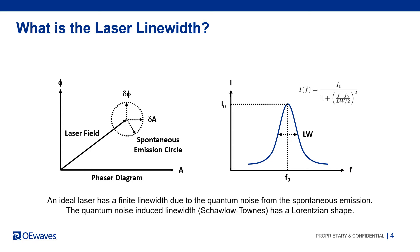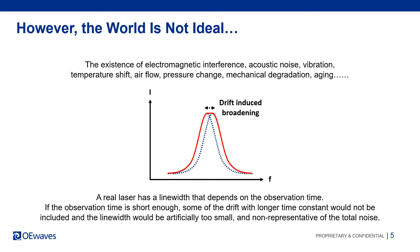The laser line width was derived and introduced by Schawlow-Townes to describe the noise due to spontaneous emission. This quantum noise induced line width typically describes the instantaneous line width and has a Lorentzian shape. However, quantum noise is not the only noise source.